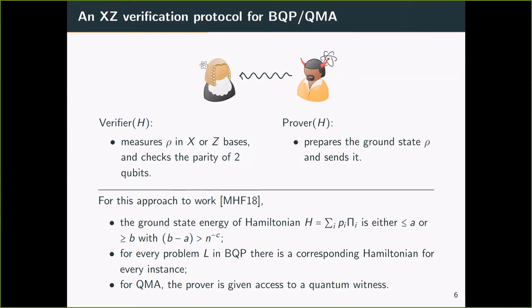If the verifier owns a small quantum computer that can perform X or Z basis measurement on two qubits, then here is a protocol that verifies the local Hamiltonian problem. The idea is simple. After receiving the instance, the prover prepares the quantum state which is the ground state of the Hamiltonian and sends it over to the verifier. The verifier samples the local term and performs X or Z basis measurements on two qubits. Then it checks the parity of the outcomes.